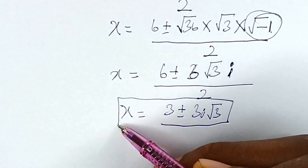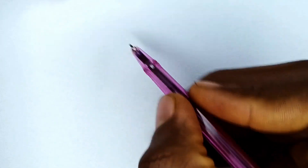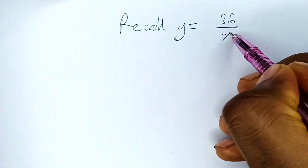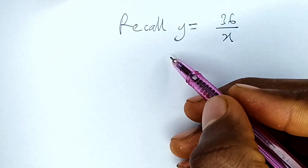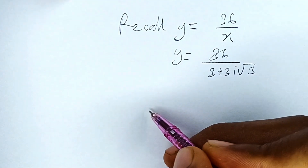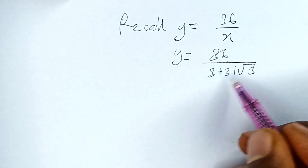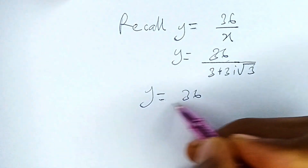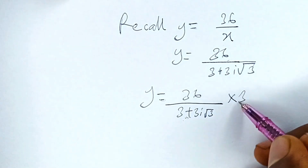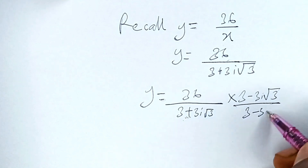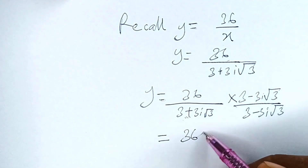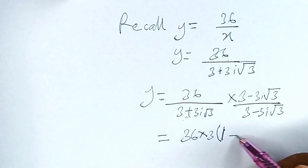So this is the value for x. Now let's find y. Recall that y is equal to 36 over x, and our x is equal to 3 plus 3i root 3. So y would be equal to 36 divided by 3 plus 3i root 3. This is an irrational fraction, so let's rationalize this denominator. We multiply by the conjugate: 3 minus 3i root 3 over 3 minus 3i root 3.